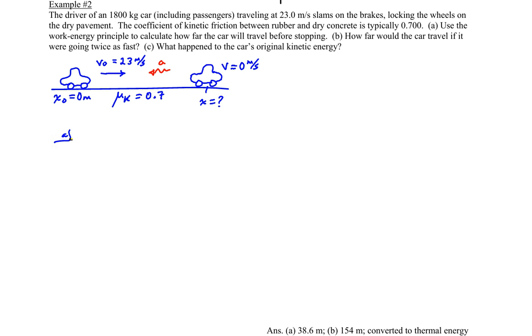So we're using the idea that the work done is equal to the change in energy of the system, and the energy in this system is really the change in kinetic energy. The work done in slowing the car is the work done by the force of friction. The change in kinetic energy is the final kinetic energy, 1/2 mv final squared, minus the initial kinetic energy, 1/2 mv initial squared.